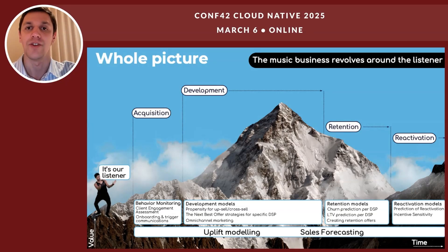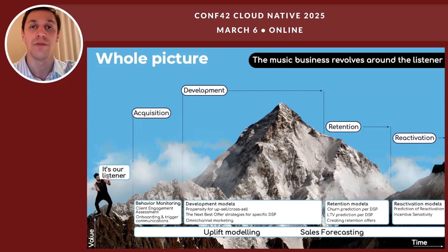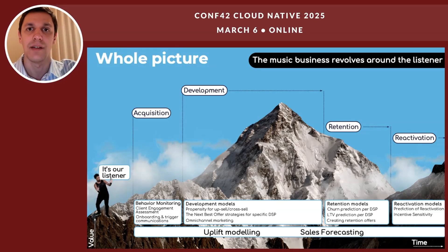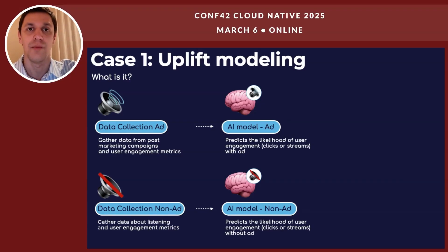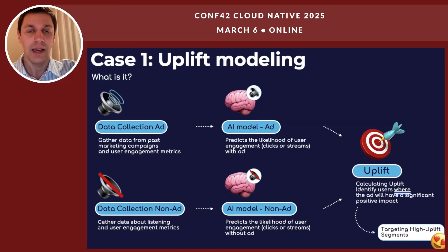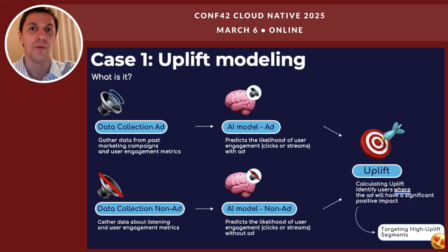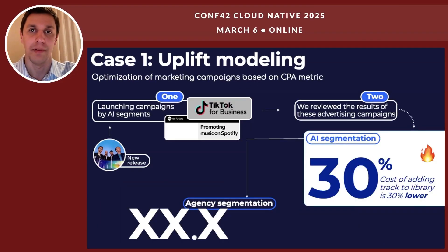Let's see how uplift modeling helps optimize marketing spend. Uplift modeling helps us measure the real impact of advertising and optimize budget allocation. We analyze two groups: users who saw an ad and those who did not. Two AI models predict engagement for each group, and uplift is the difference between these predictions — it tells us where ads actually drive more listens or clicks. Instead of spending on users who would engage anyway, we focus on those where ads make a real difference, maximizing impact and reducing wasted spend.